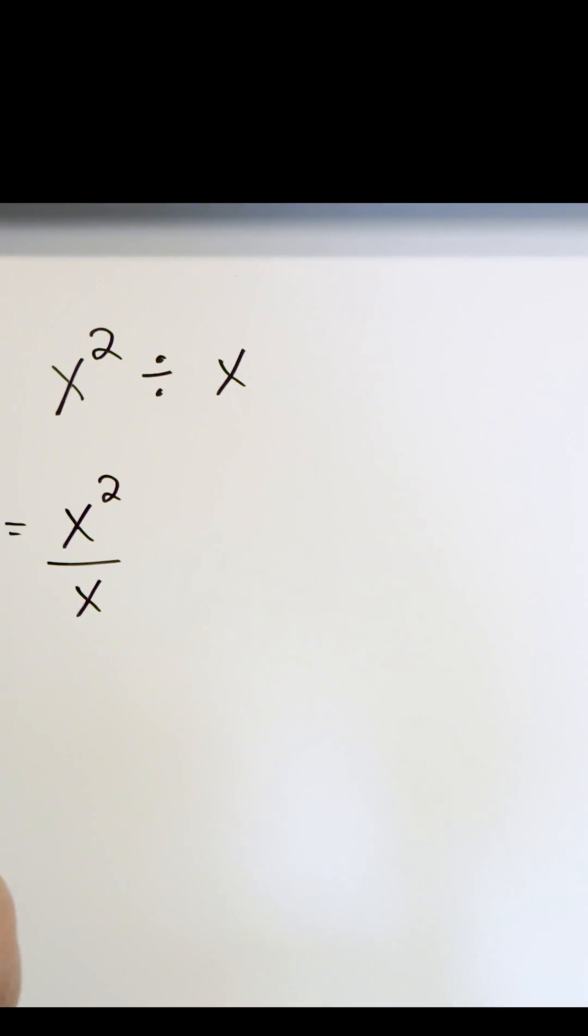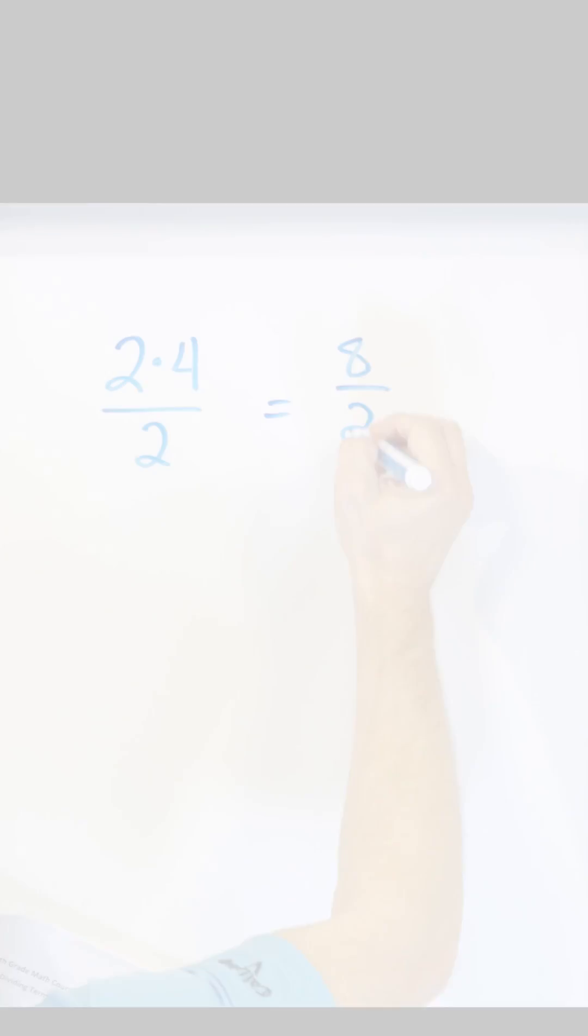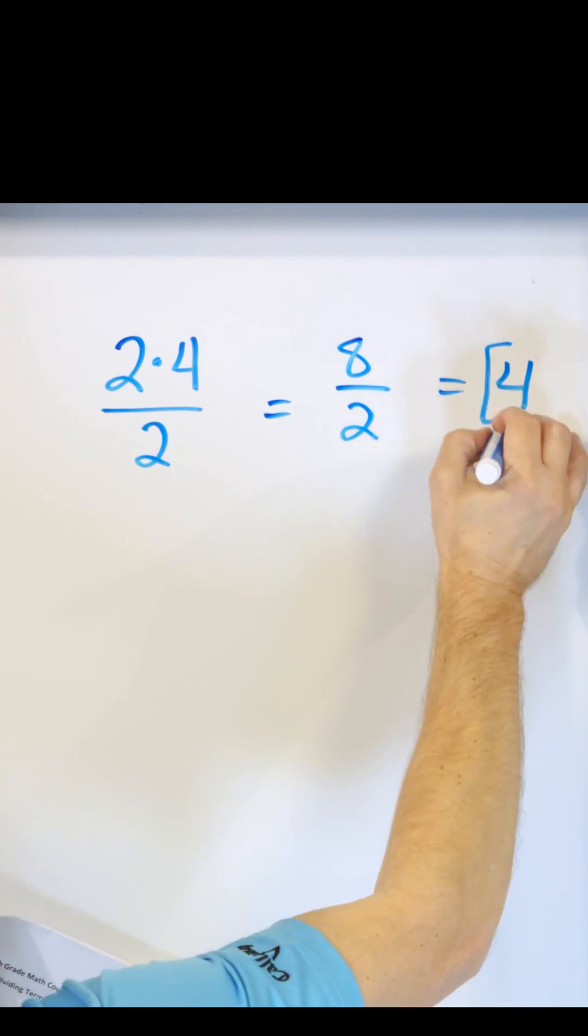Now before we actually do anything, I want to go back to talk about numbers a little bit because everybody understands numbers. And 8 divided by 2 would be 4, and this would be the final answer.